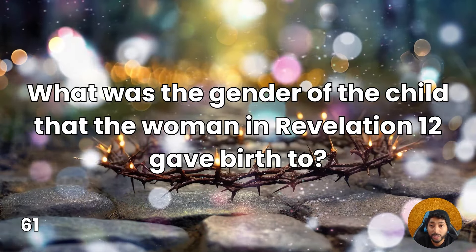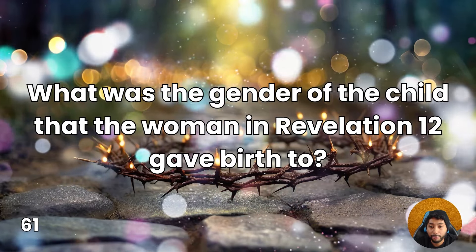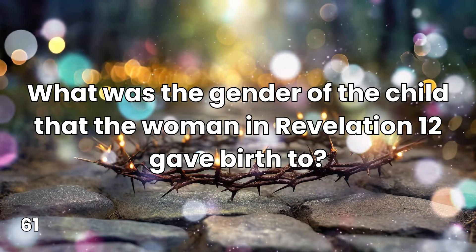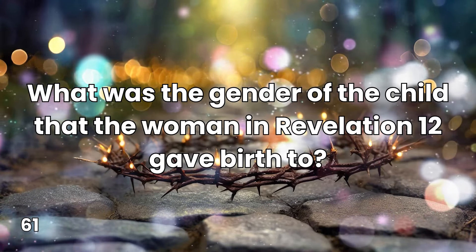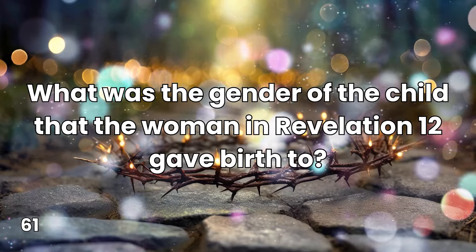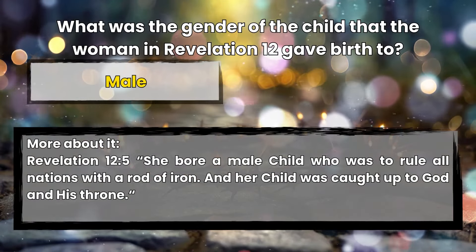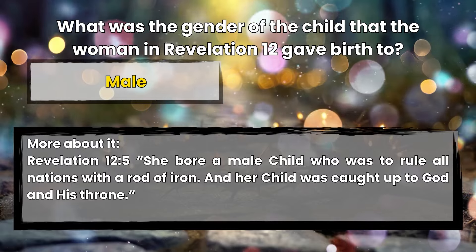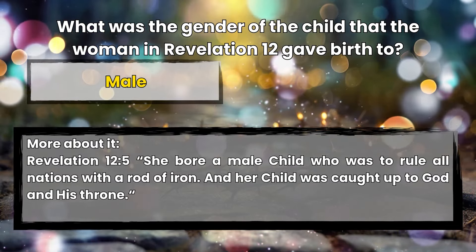Question 61: What was the gender of the child that the woman in Revelation 12 gave birth to? Male. Revelation 12:5 — She bore a male child who was to rule all nations with a rod of iron, and her child was caught up to God and his throne.